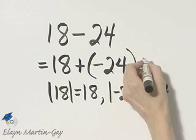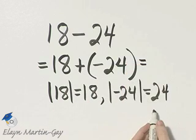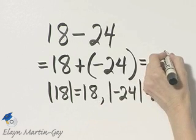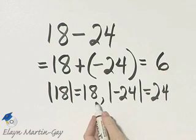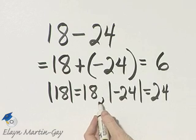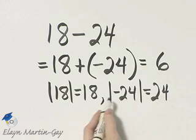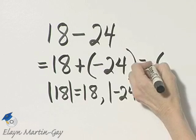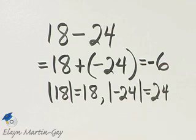All right, so how do I add two numbers with different signs? I subtract their absolute values. 24 minus 18, that's 6, so I subtract their absolute values and I keep the sign of the number with the larger absolute value. 24 is larger than 18, and the sign of this number is negative, so this is negative 6.